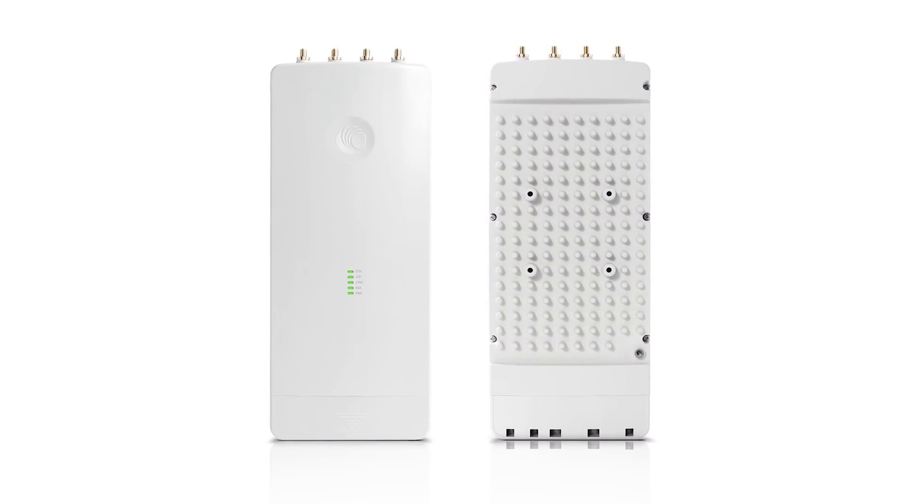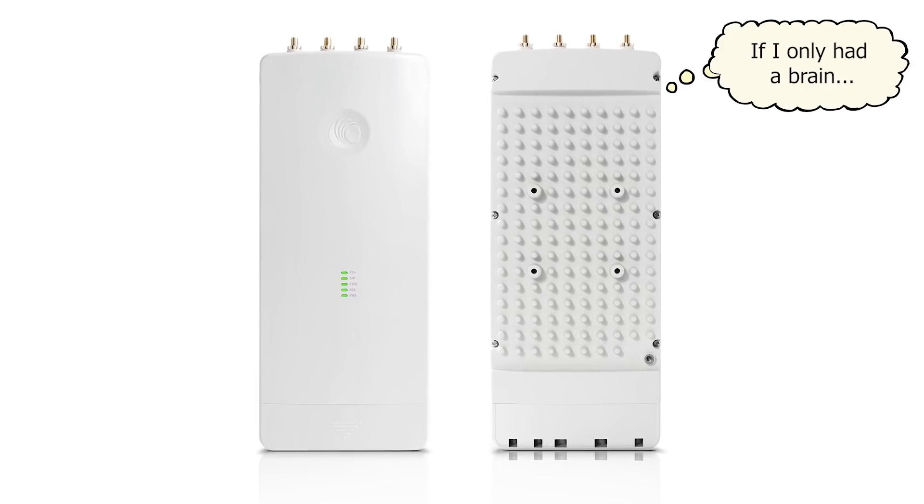Another benefit is processing power. The EPMP 3000 is physically larger with a bigger heatsink because it has a significantly better CPU — real electronics with real power consumption going into CPU performance. The packets per second capability on the EPMP 3000 is much higher than the EPMP 2000. Depending on the number of subscribers and other conditions, the headline figure is approximately 100,000 packets per second.